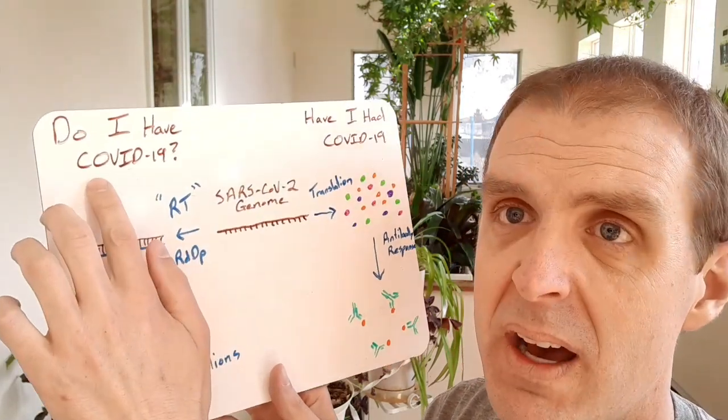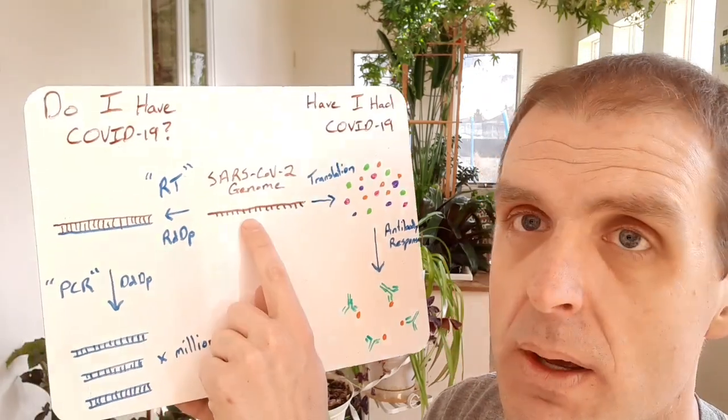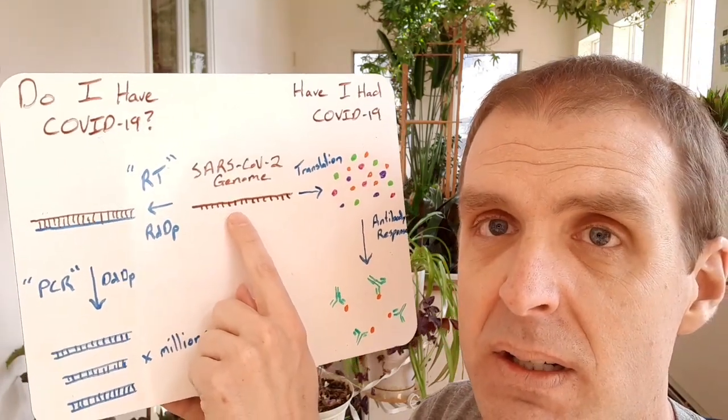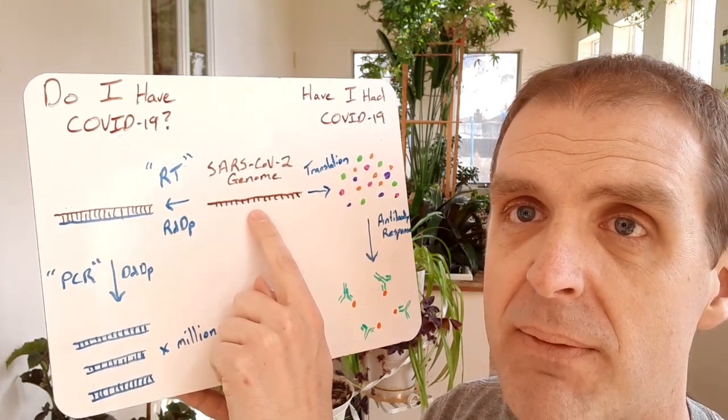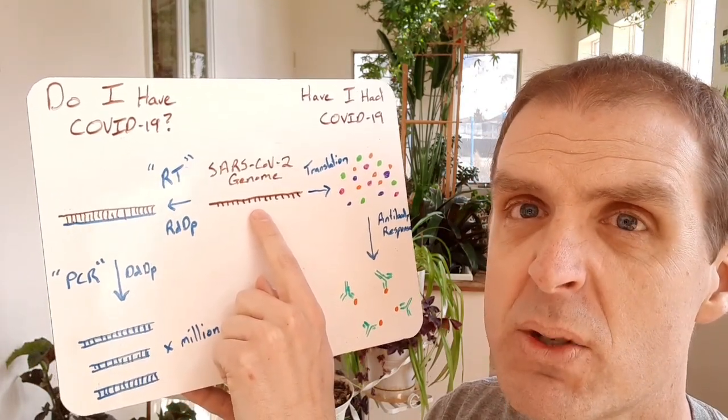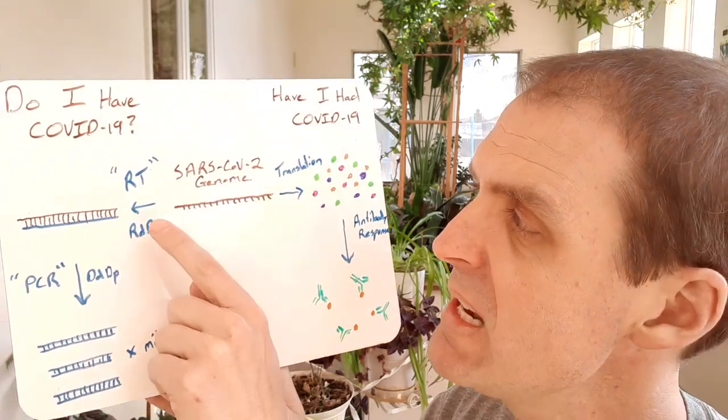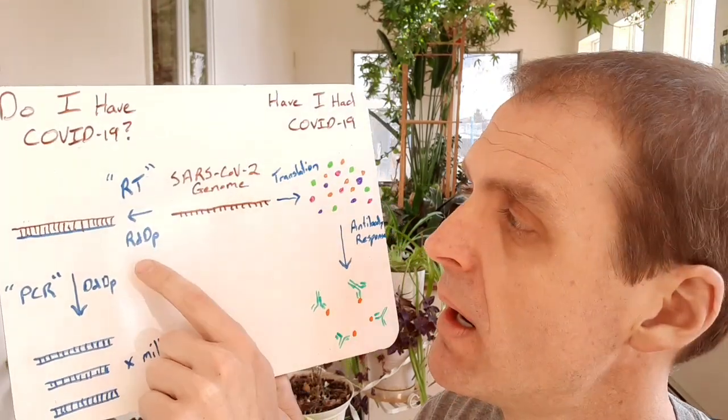Do I have COVID-19? You do an assay to test that by first collecting RNA from a body sample, so it could be a nasal swab, and you do an assay called an RT-PCR.